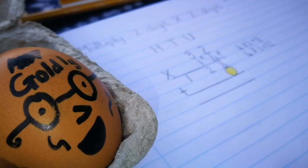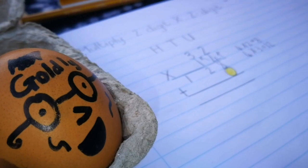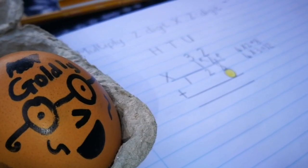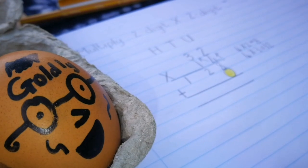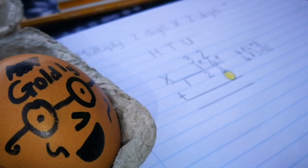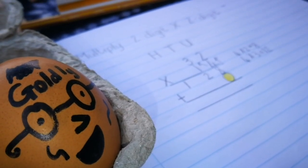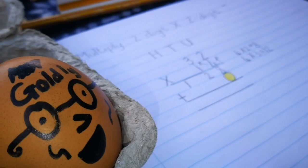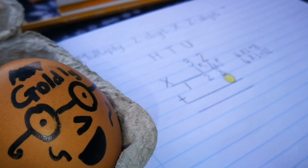We are finished with the units column. Now we're going to times the tens column. And this is where the golden egg comes in. When we times by 10, the answer always ends with a zero.